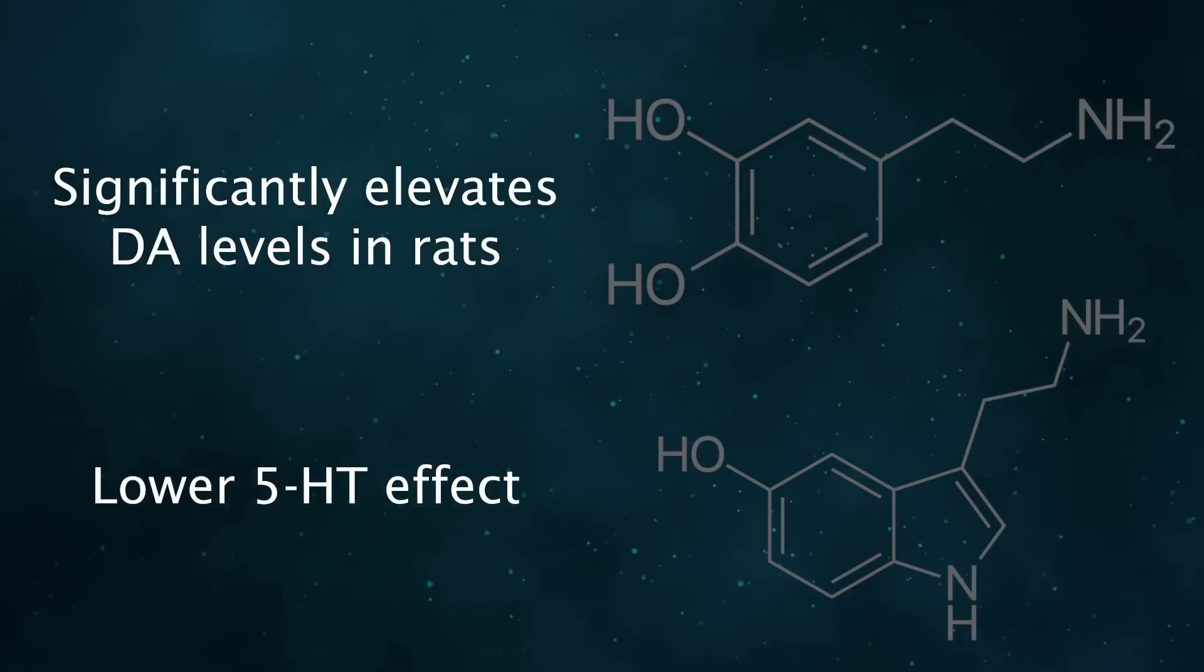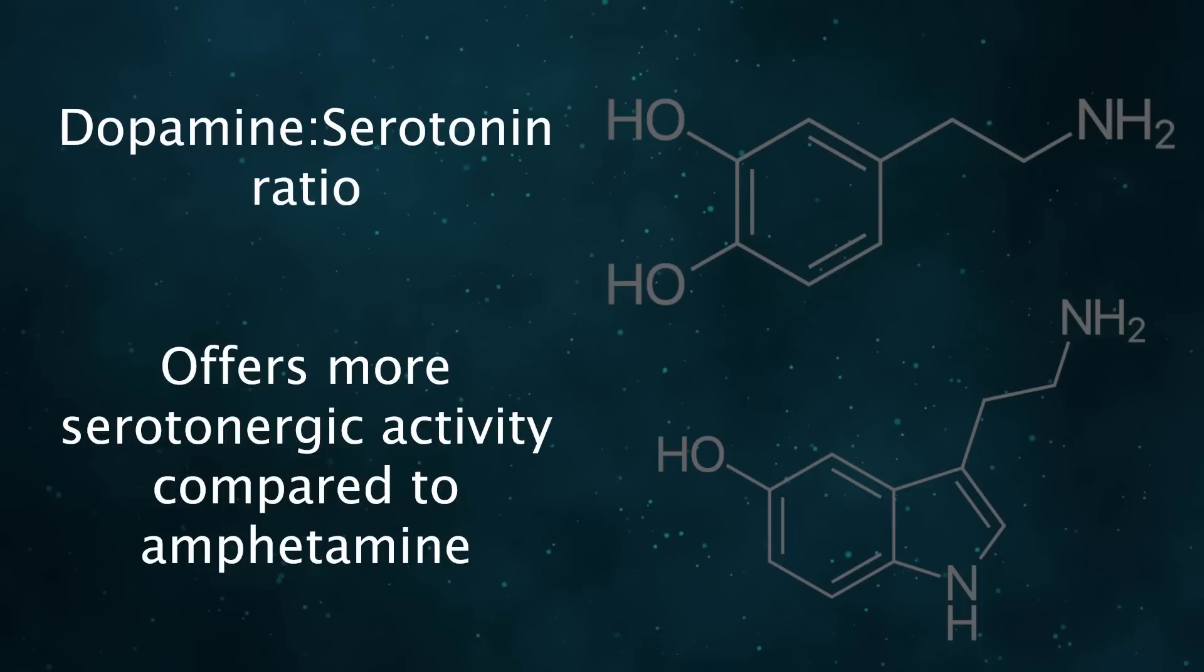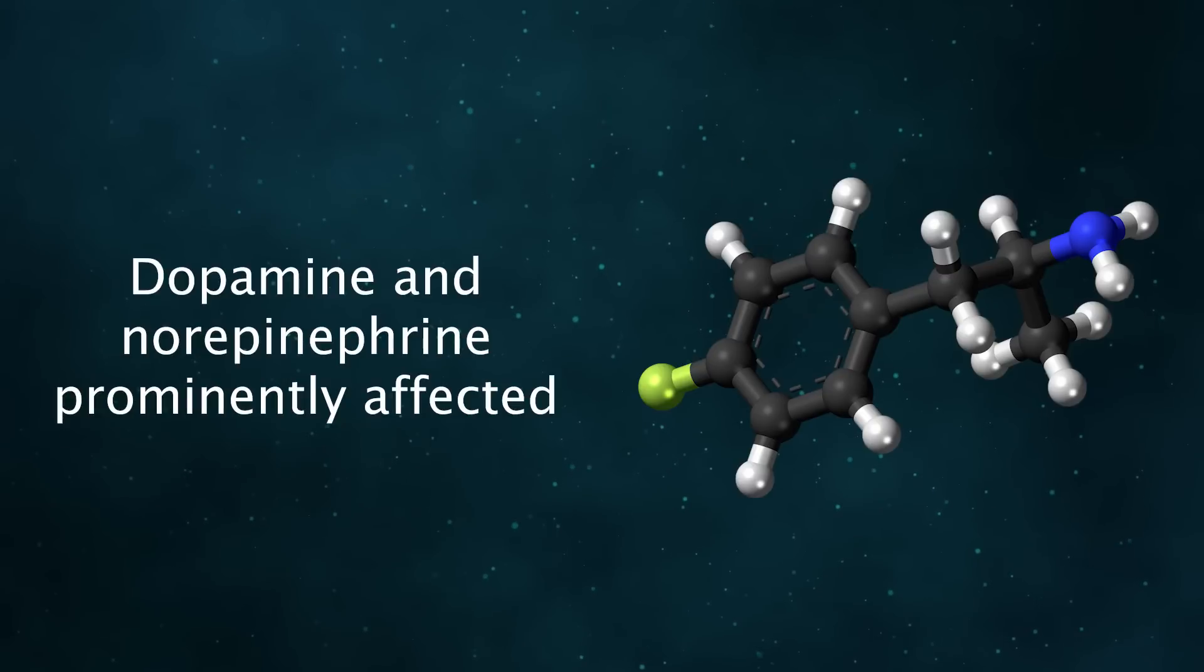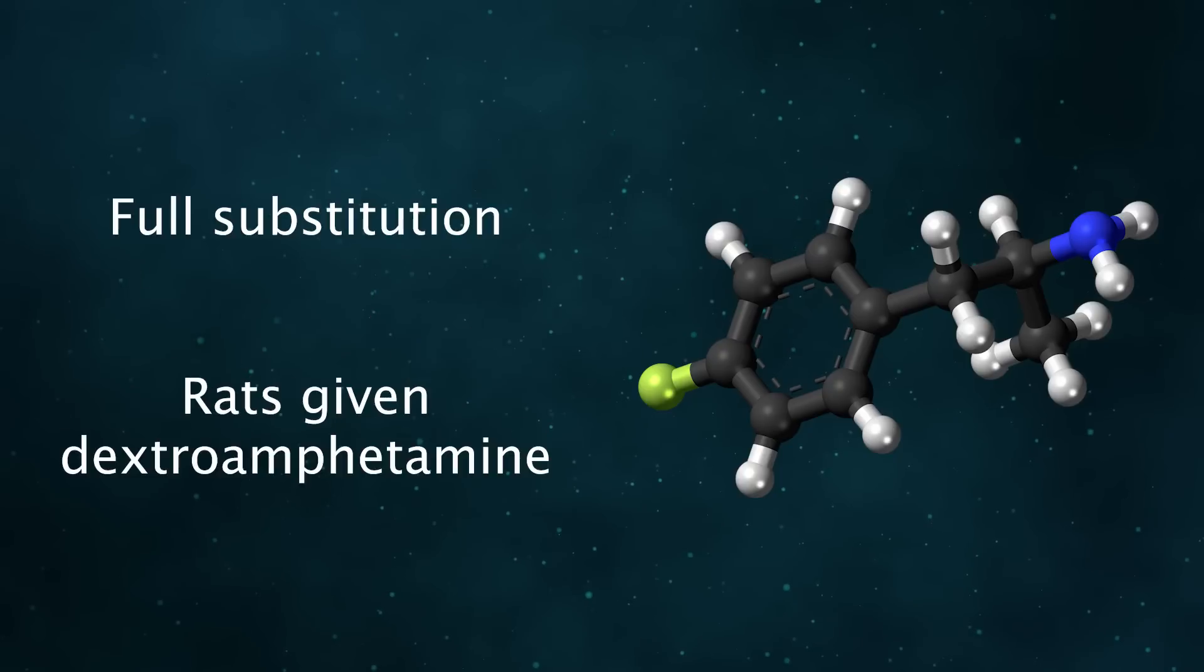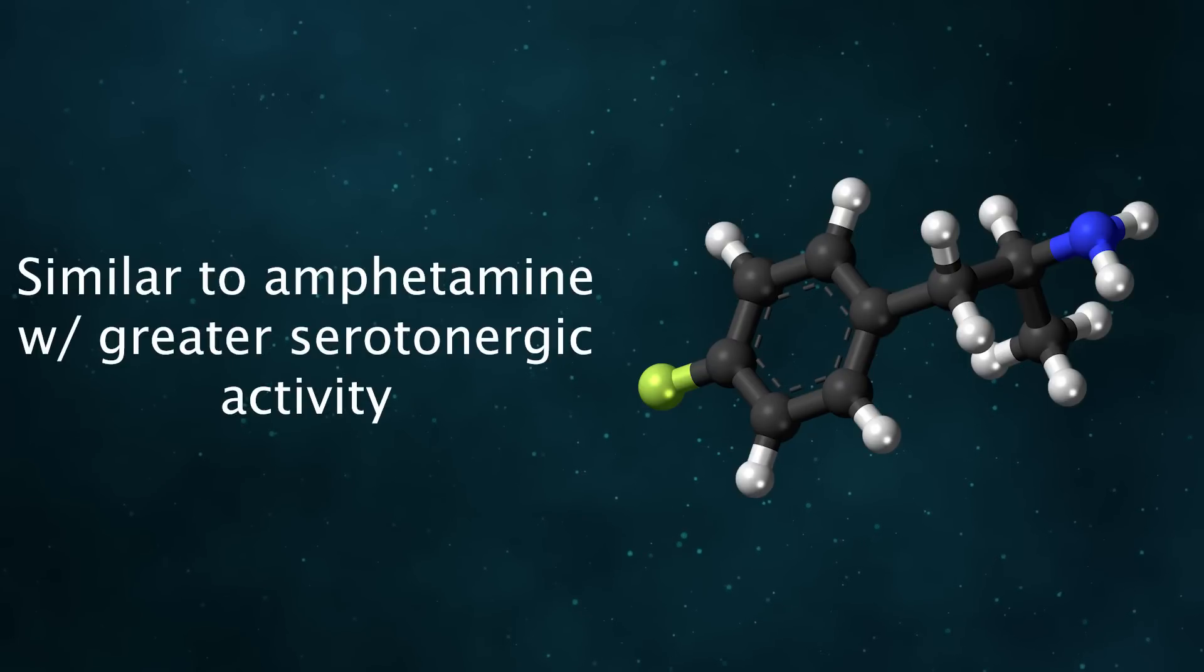It can significantly elevate dopamine levels in rats, with lower effects on serotonin. The dopamine-to-serotonin ratio for 4-FA offers more serotonergic activity than you'd find with amphetamine, but dopamine and norepinephrine are still more prominently affected. In rats given dextroamphetamine, 4-FA fully substituted, indicating similar effects in both animals and humans. Overall, this means its pharmacology is similar to amphetamine, but it does offer more serotonergic activity.